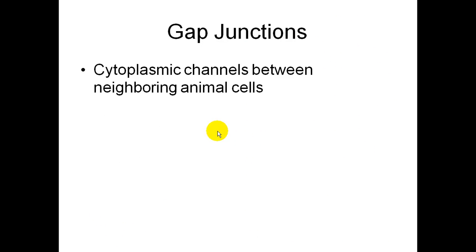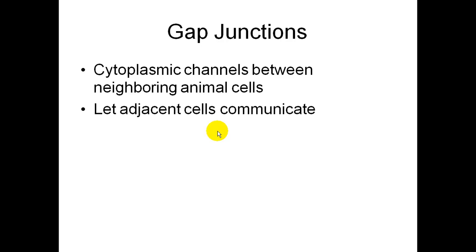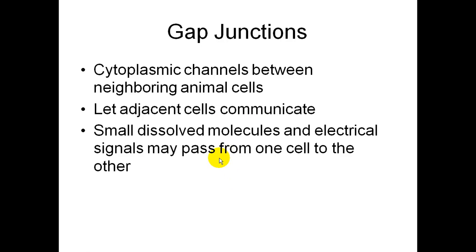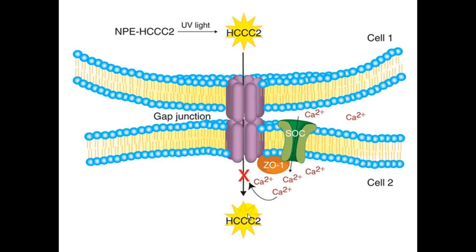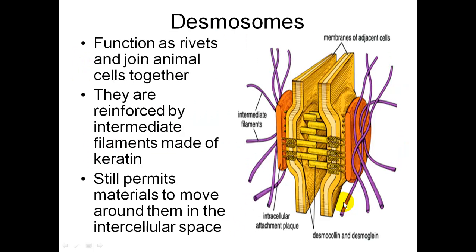Gap junctions are cytoplasmic channels between animal cells, similar to plasmodesmata in plant cells. They let adjacent cells communicate — small dissolved molecules and electrical signals may pass from one animal cell to another, allowing for communication as well.